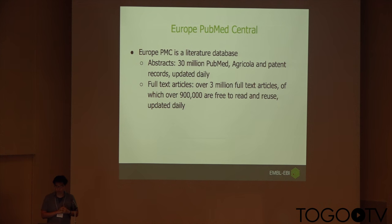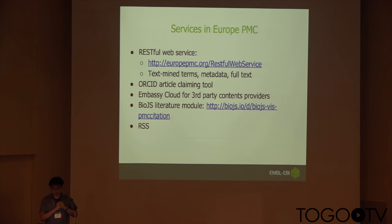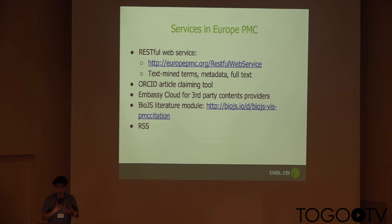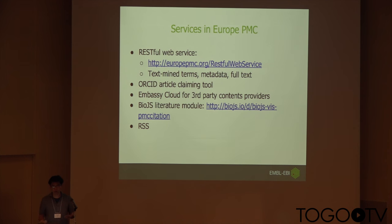Europe PMC is a literature database. We have abstracts and full-text articles, but also other resources like abstracts from Agris, patents, and more. Like PMC, we provide a RESTful service with which you can get all those metadata and full text. We also do some text mining, so with the same API you can get all those text mining terms as well. If you have an ORCID ID, you can do some search on Europe PMC and link your articles to your own ORCID. EBI also provides cloud computing power, so if you have content and want to run your algorithms, you can apply for EMBL-EBI Cloud.